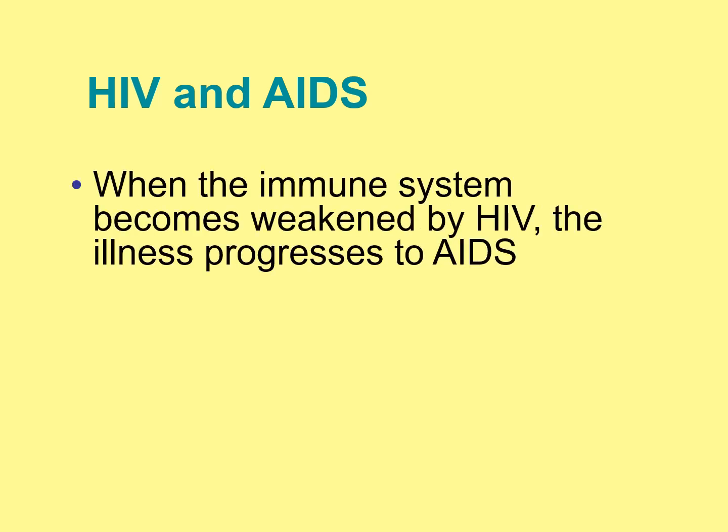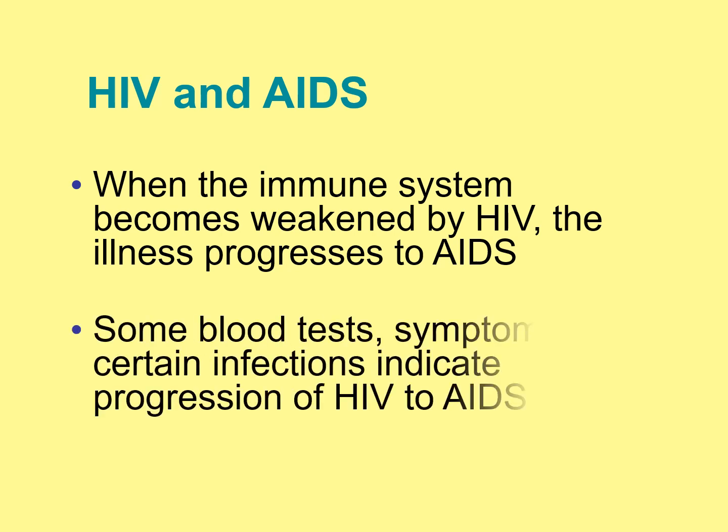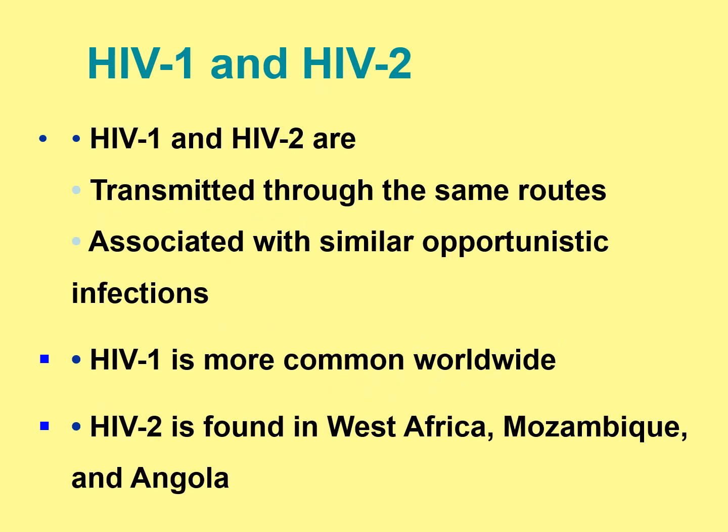When the immune system becomes weakened by HIV, the illness eventually progresses to AIDS. Some blood tests, symptoms, or certain infections indicate progression of HIV to AIDS. There are two strains of HIV, both transmitted through the same routes, and both are associated with similar opportunistic infections.